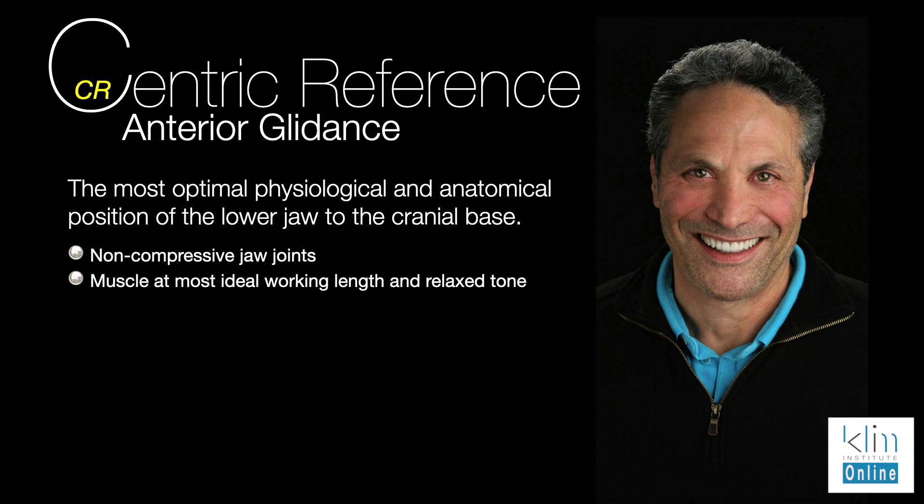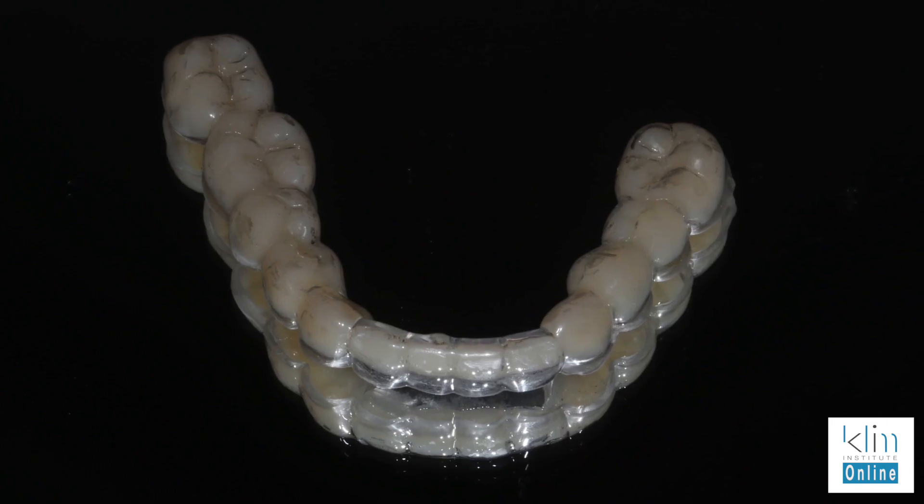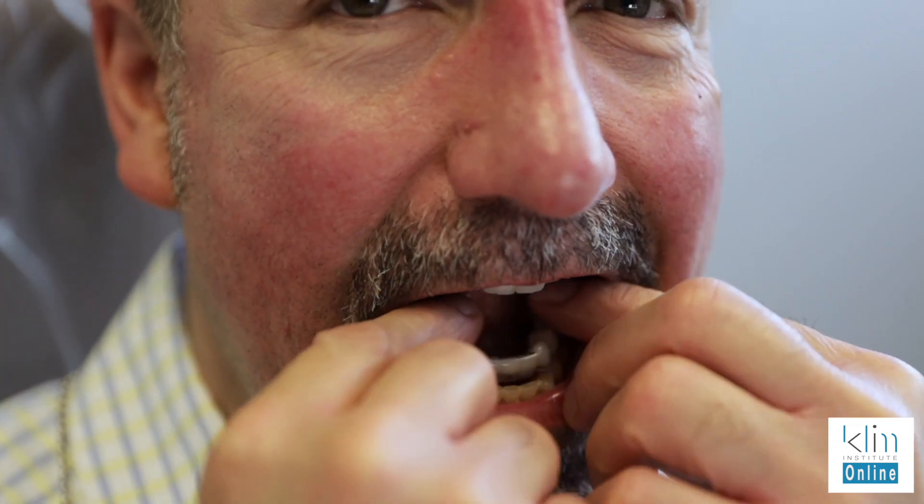When I have an ideal vertical dimension and the jaw is not retracted and compressed back to the cranial base when the patient closes, the muscles will be more at an optimal length and relaxed tone — meaning they don't have muscle pain. That's really what I want to look at in diagnosis. That's what we use a removable appliance for: to determine whether the symptoms can be altered with an occlusal appliance in a balanced position.